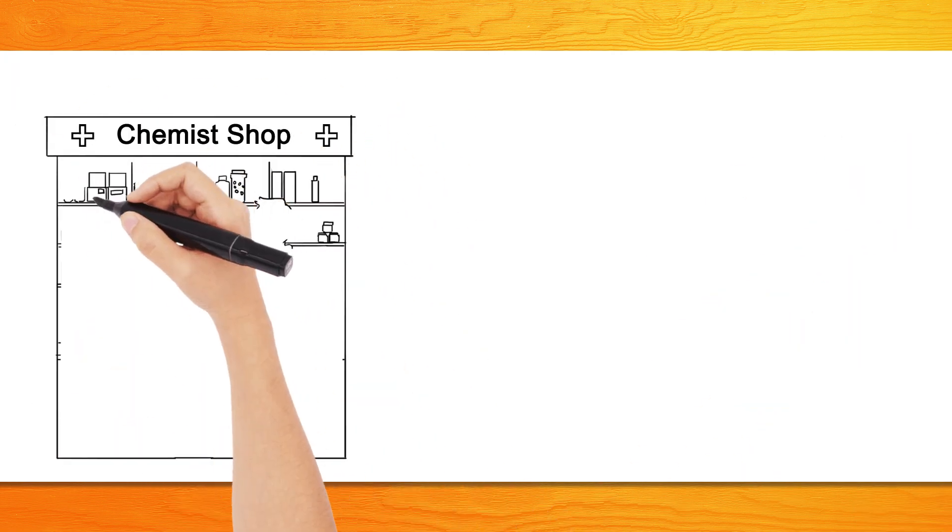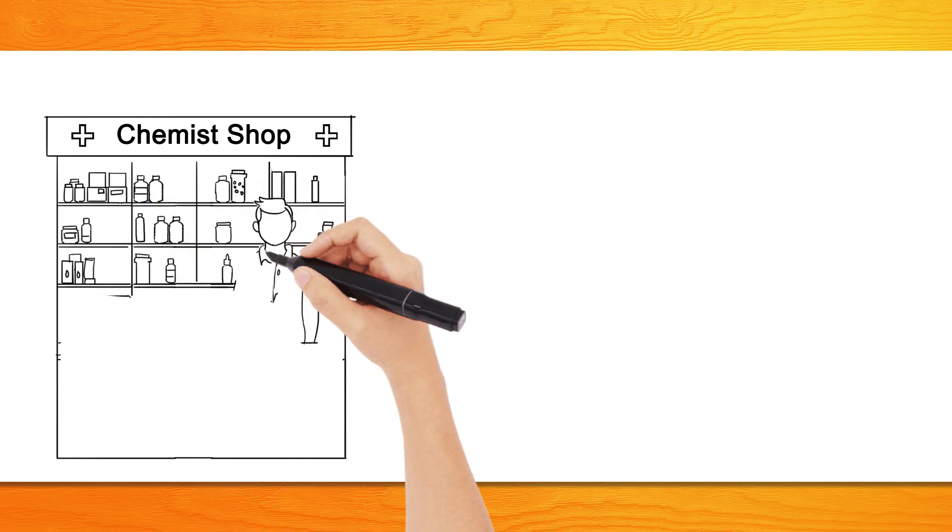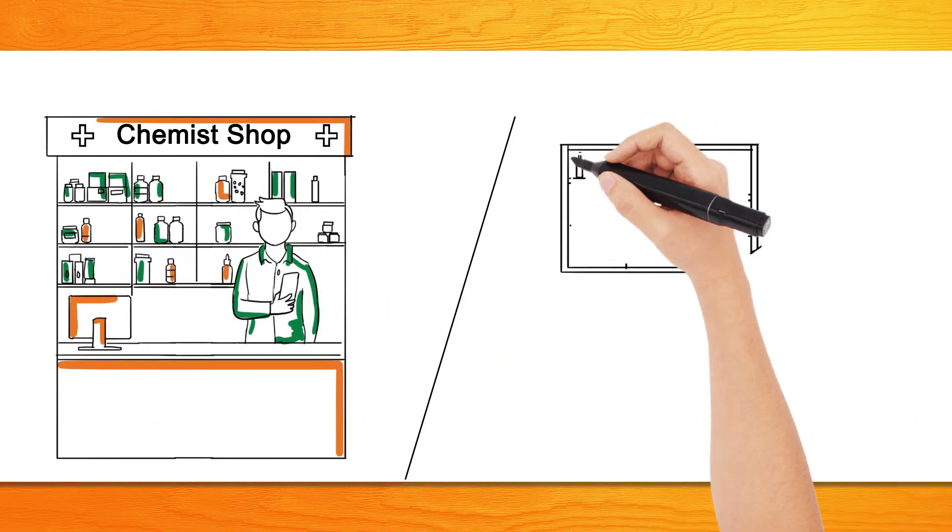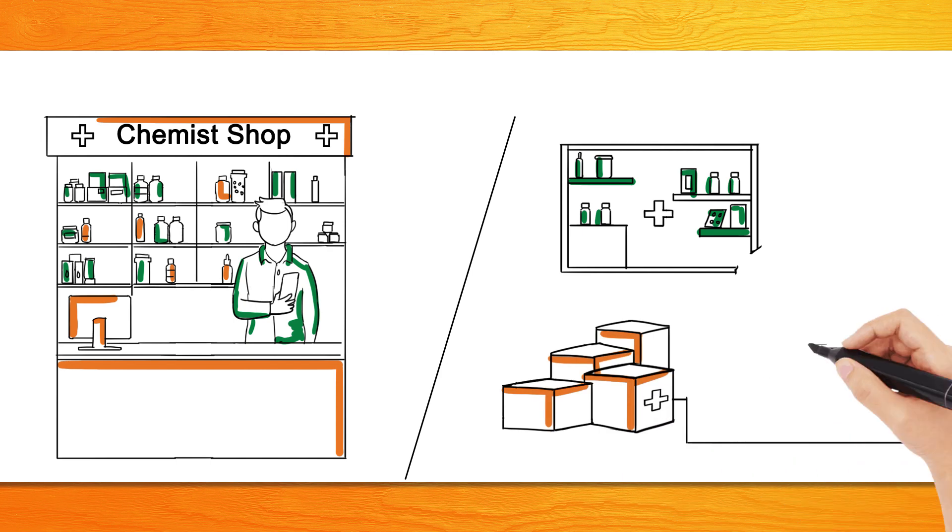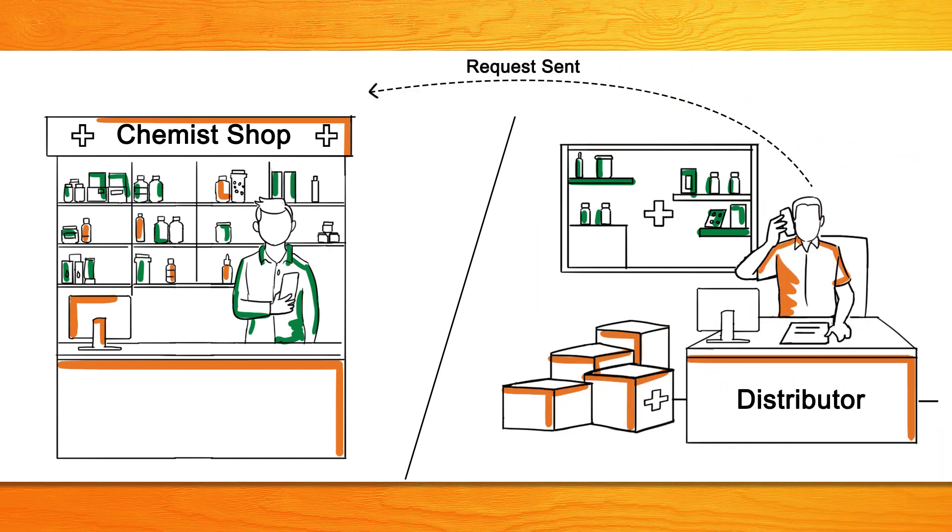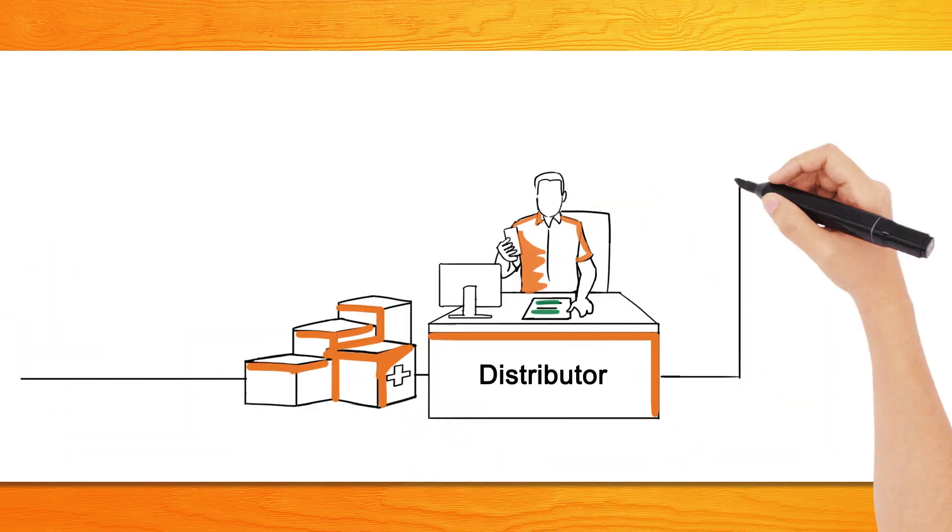The chemists can also pay for pharmaceutical products and order them directly from the distributors by requesting distributors to send a collect request through the chemist UPI ID against the products required post receipt of the payments.